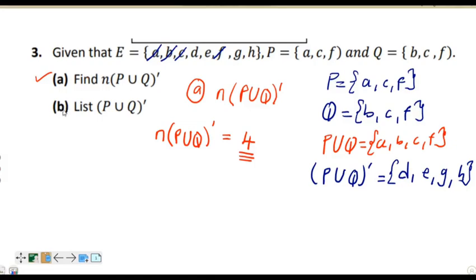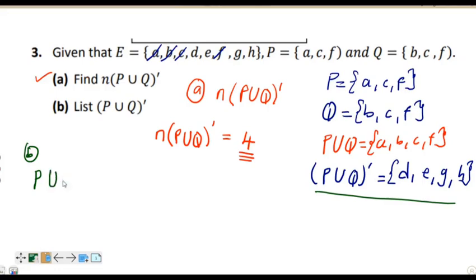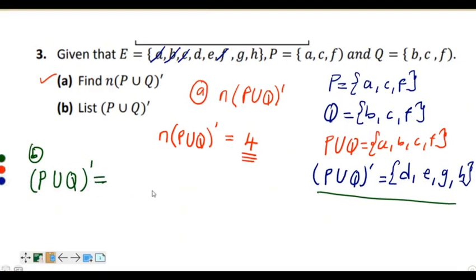For question B, it says: list (P union Q) complement. This one is very easy because we have already answered it. (P union Q) complement is equal to {D, E, G, and H}.